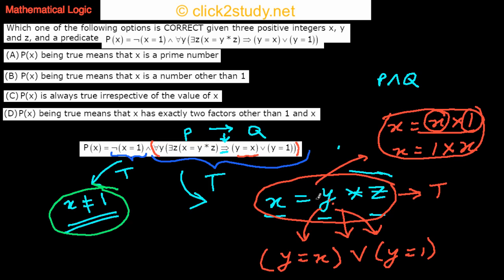We also know that x is not equal to 1 — because 1 is a factor of itself, so that case is excluded. Having only factors 1 and x itself, with x not equal to 1, means x is a prime number. Prime numbers start from 2, which is why this condition was important. So option A is correct.